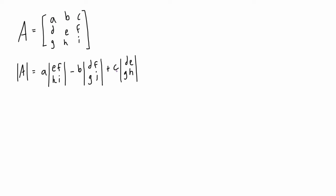No matter which row or column we pick, it will alternate positive, negative, positive. For the first term, we have 'a' times the determinant of a 2×2 sub-matrix. The way we get this is: we take the chosen element, draw lines through its row and column, and whatever's left over is the sub-matrix whose determinant we multiply by that element.